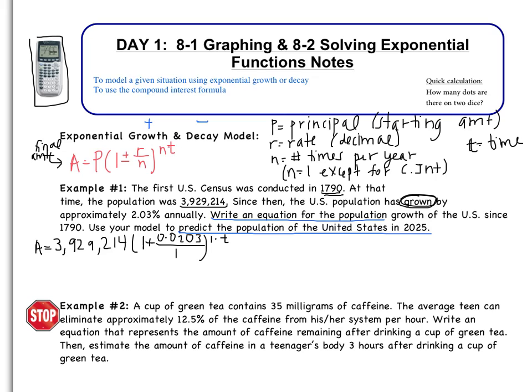Remember, this is an equation, so we have to have a variable. We can't substitute for every single variable. Simplifying, this becomes A equals 3,929,214. Inside parentheses, it becomes 1.0203 raised to the t power. And just for good measure, it's always good to identify what that t is. So in our case, it says that the U.S. census was conducted in 1790. So our t is being counted from 1790. So t is the number of years since 1790. And that's going to be really important for the second part of the question.